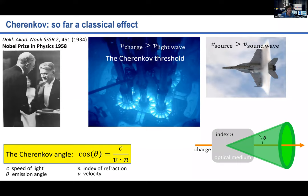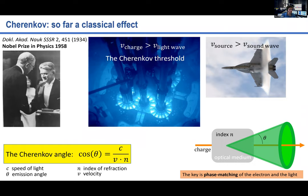Cherenkov radiation is relatively easy to explain theoretically. Starting from Maxwell's equations in a couple of lines, we can show that a particle moving through a medium emits radiation in a cone. The Cherenkov angle formula is: cos θ = c/(v·n), the ratio of the speed of light in free space to the product of the particle velocity and index of refraction. You can also see this as an effect of phase matching, exactly like what we teach in nonlinear optics — between one wave, which is the electron, and one wave, which is the light.